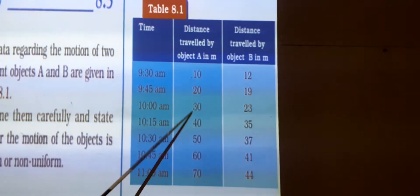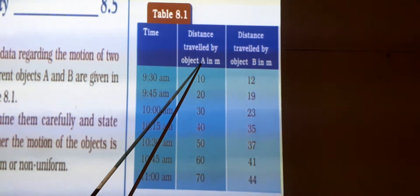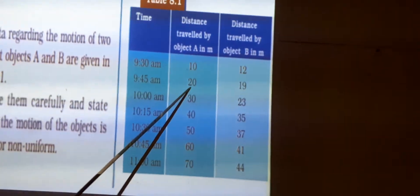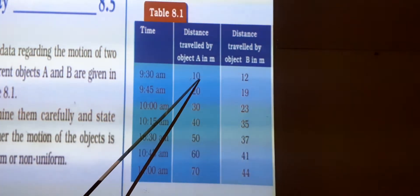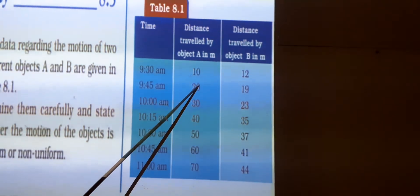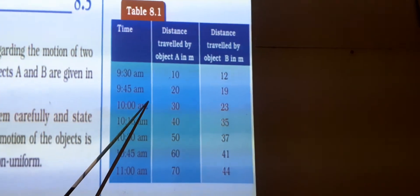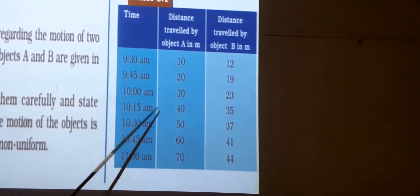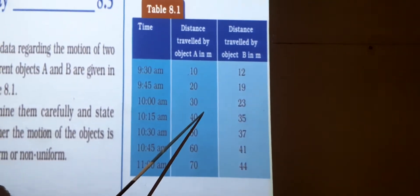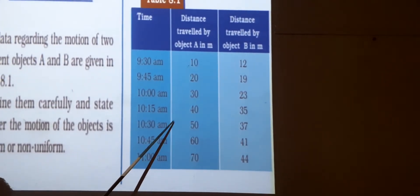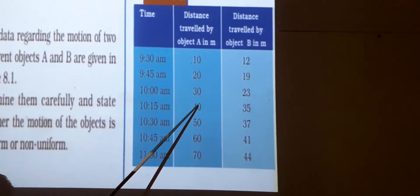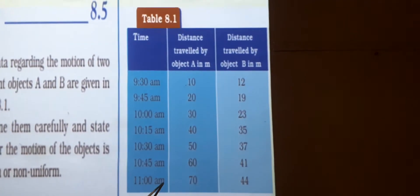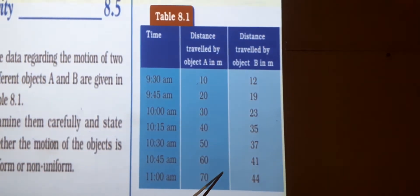Now look at the distance covered by object A. It is at a distance of 10 meters. After 15 minutes it is at 20 meters, so in 15 minutes it covers a difference of 10 meters — 20 minus 10 equals 10 meters. In the next 15 minutes, the difference is 30 minus 20, again 10 meters. In the following intervals, the difference is 40 minus 30, that is 10 meters. Here also, for 15 minutes, the difference is 10 meters each time.